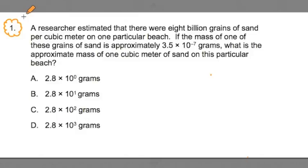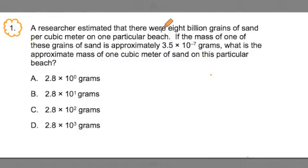As I read it over, visualize what the scenario is and then we'll get to the math. Number one: A researcher estimated that there were 8 billion grains of sand per cubic meter on one particular beach. If the mass of one of these grains of sand is approximately 3.5 times 10 to the negative 7th grams, what is the approximate mass of one cubic meter of sand on this particular beach?